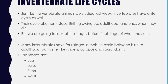Invertebrate life cycles are basically similar to vertebrate life cycles. Just like the vertebrate animals we studied last week, invertebrates have a life cycle as well. Their cycle also has four steps, and it's the same four steps really as vertebrates: birth, growing up, adulthood, and then their life ends when they die. But we are going to look at the happier parts of their life — the stages before the final stage. Most invertebrates have four stages within their life cycle, which is between birth and adulthood.